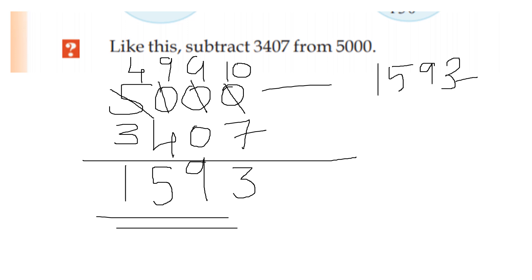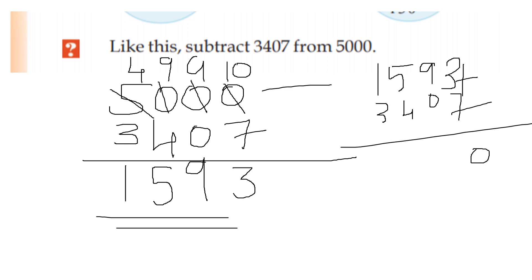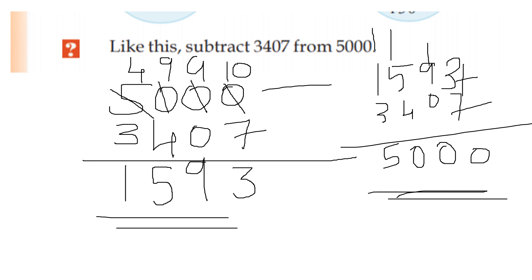1,593 plus 3,407. Let's add to verify: 7 plus 3 is 10. 9 plus 1 is 10. 5 plus 1 is 6. 6 plus 4 is 10. Result: 5.